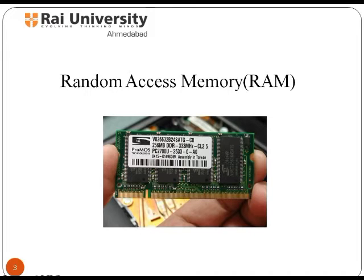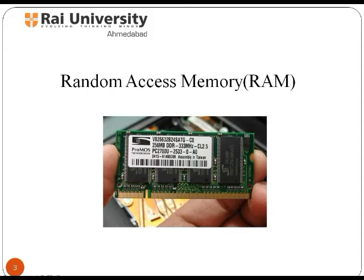There are two main forms of modern RAM: Static RAM and Dynamic RAM. In Static RAM, a bit of data is stored using the state of six transistor memory cells. This form of RAM is more expensive to produce but is generally faster and requires less power than Dynamic RAM. In modern computers it is often used as cache memory for the CPU.